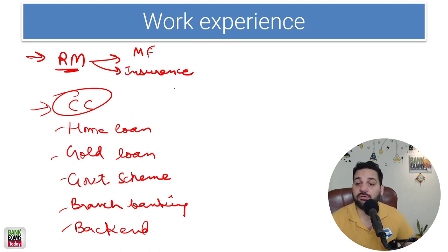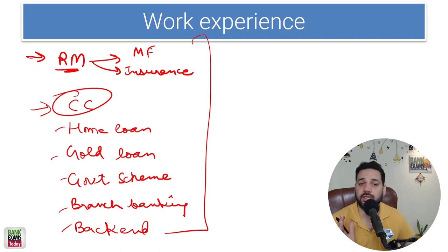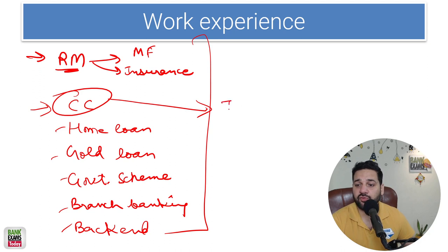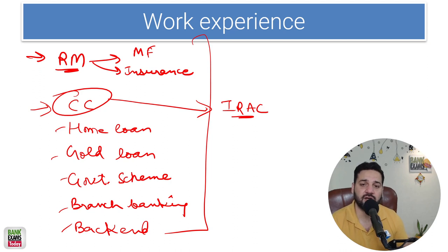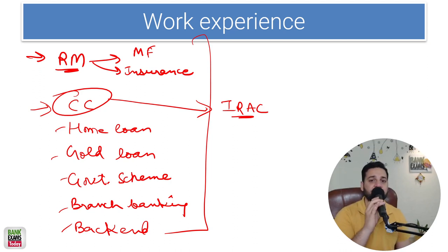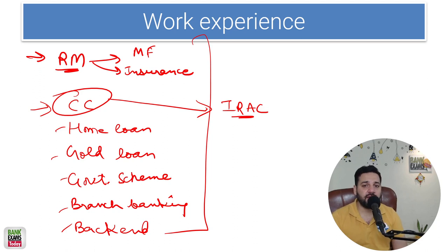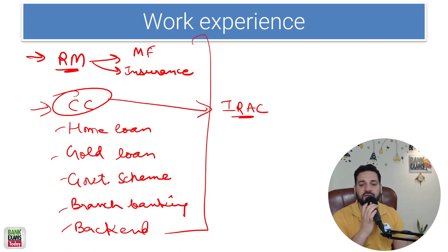You need to know in-depth about the products you are dealing in. If you are dealing in CC, you are supposed to know IRAC norms in-depth. You need to know when a CC account goes out of order — what conditions make a CC account out of order, what is happening with NPA, the definition of NPA, how an account goes NPA, how an agricultural account goes NPA.